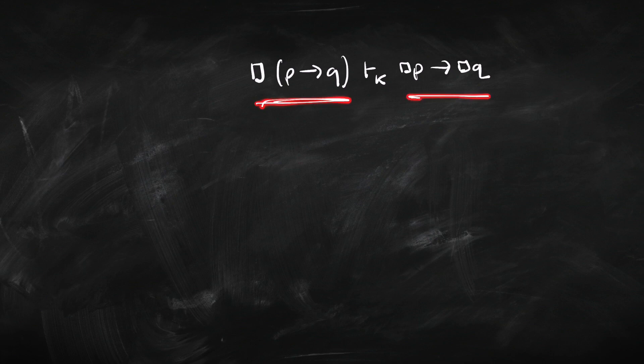We've shown that that premise entails that conclusion in modal logic K. Why in modal logic K? Because we only used the K rules. We didn't use any of the additional rules for KT4 or whatever — we didn't use the T rule or the 4 rule. We only used the basic rules. Of course, if we were asked to do the proof in KT4, that proof would still count. You don't have to use those additional rules. If it holds in basic modal logic, it's going to hold in all the other ones as well.